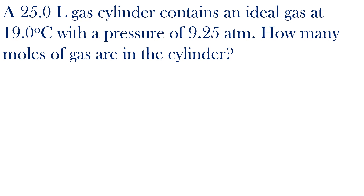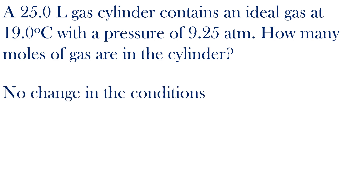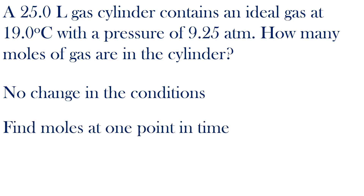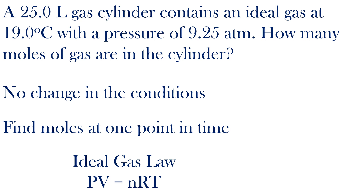A 25.0-liter gas cylinder contains an ideal gas at 19.0 degrees Celsius with a pressure of 9.25 atmospheres. How many moles of gas are in the cylinder? There are no changes in conditions; we want to find the moles at one point in time. I'll use the ideal gas law.